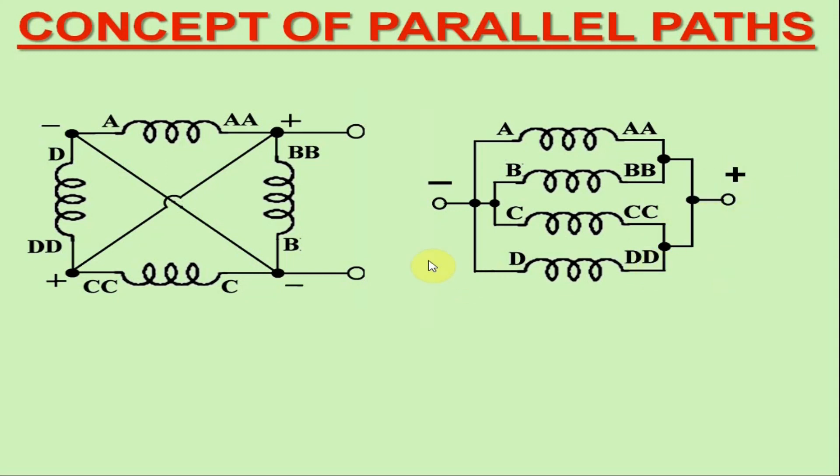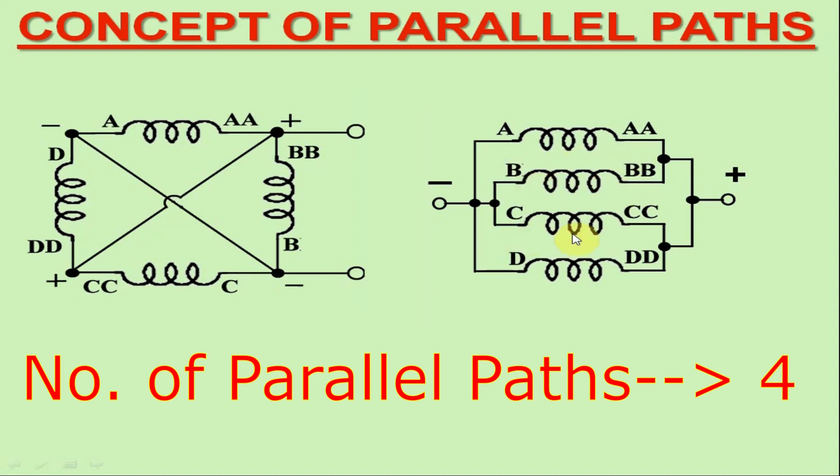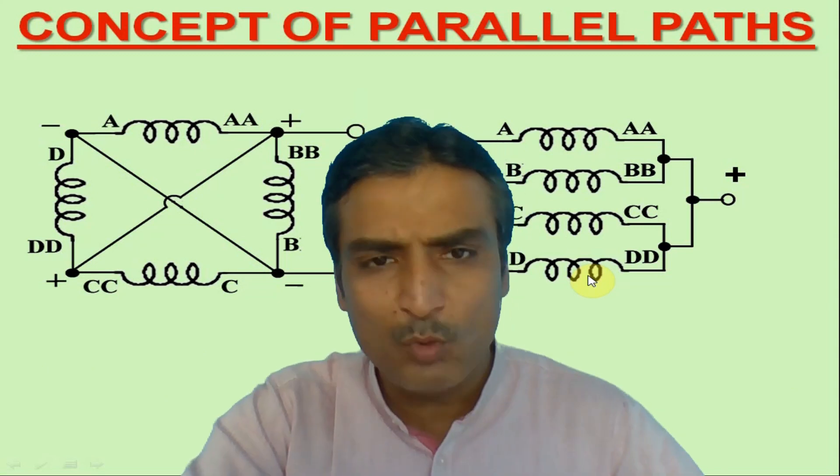On the other hand, the coil ends AD and BC are connected to the negative brush terminals. Clearly, you may observe that there are four parallel paths for the flow of armature current.